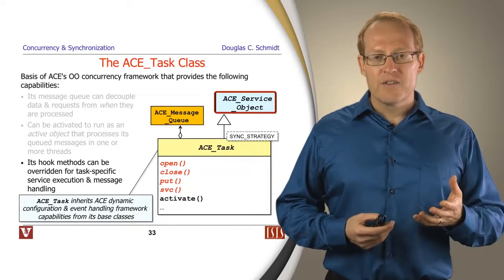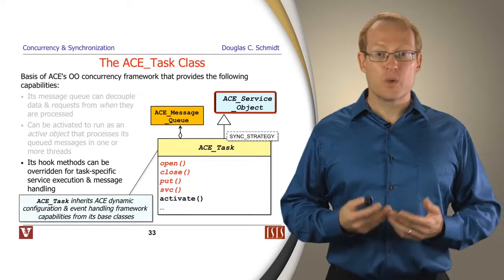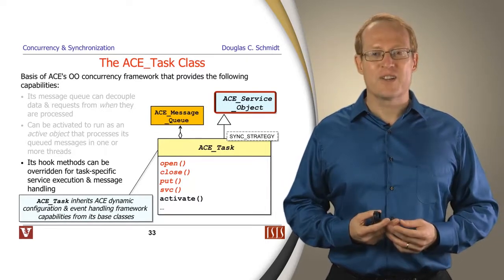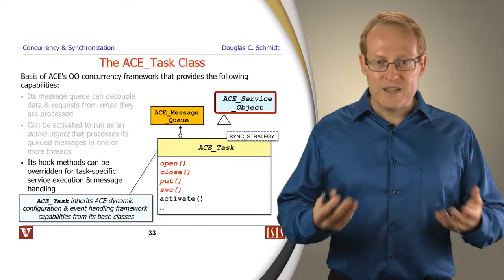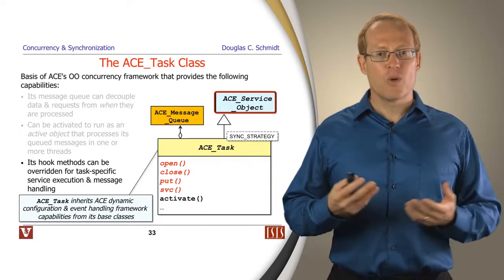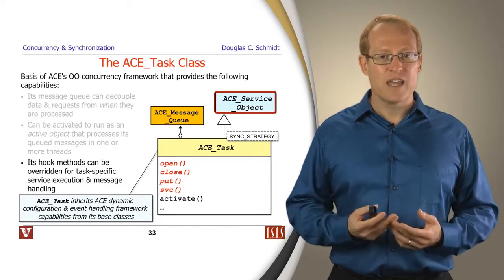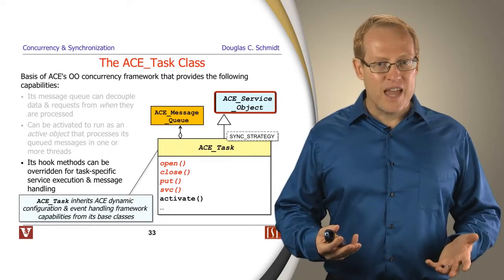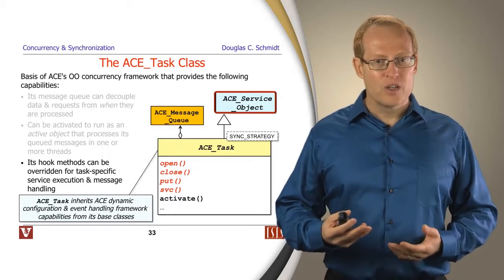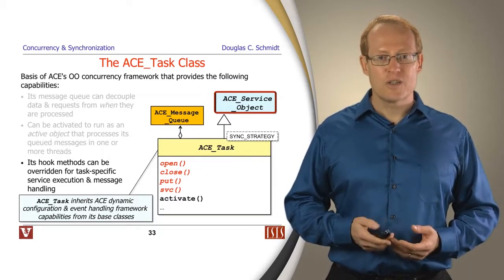By inheriting from ACE service object, which in turn inherits from ACE event handler, you can use instances of ACE task both to be linked dynamically as well as to be run by callbacks reactively from the reactor. And we'll see how we use this a little bit later when we generalize the application of this framework to other more complex concurrency patterns.